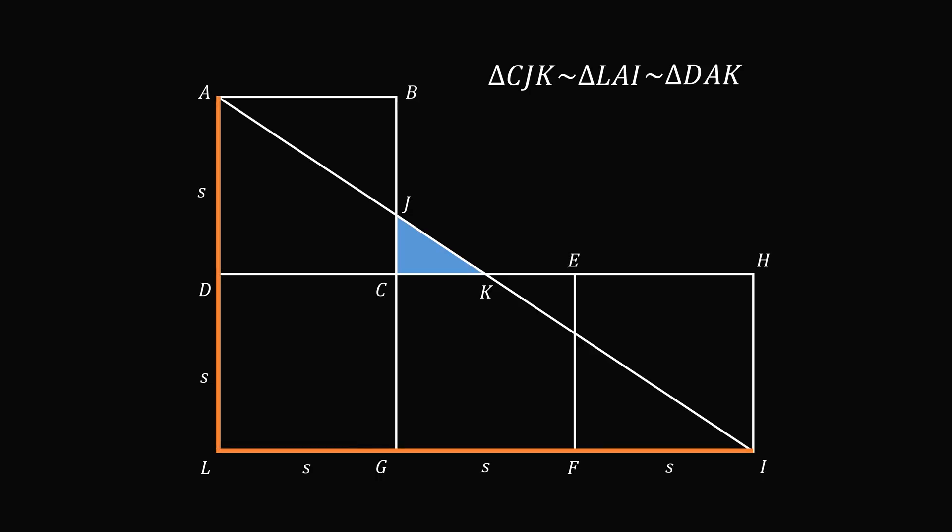LI divided by LA is equal to DK divided by DA. This means that 3S divided by 2S is equal to DK divided by S. We can solve this equation for DK to get that DK is equal to 3S divided by 2.